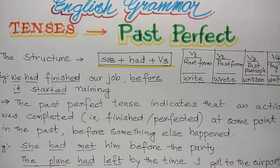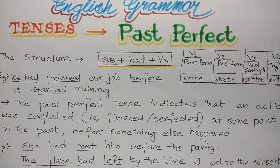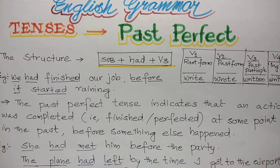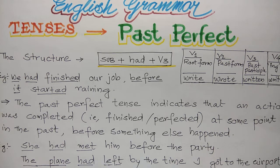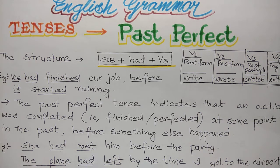'The plane had left by the time I got to the airport.' 'Left' is the past participle of 'leave'. This is the first action — the plane had already left by the time I got to the airport. When I reached the airport, the first action is in the past perfect tense.